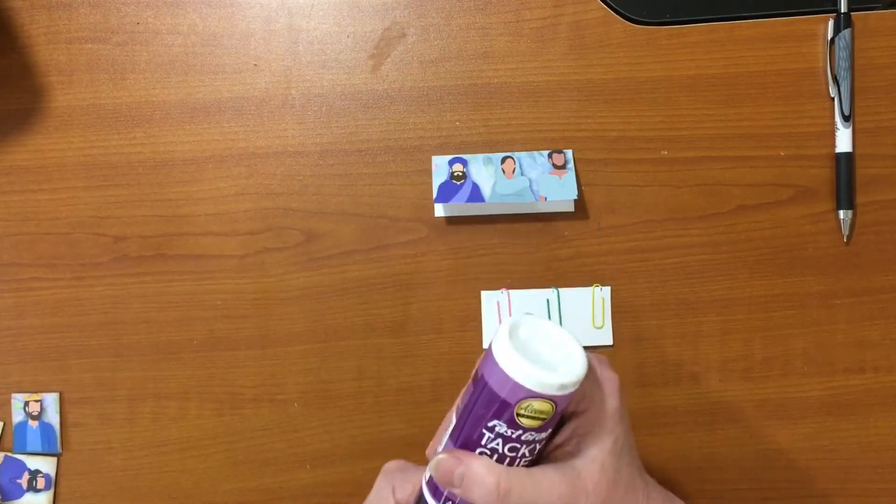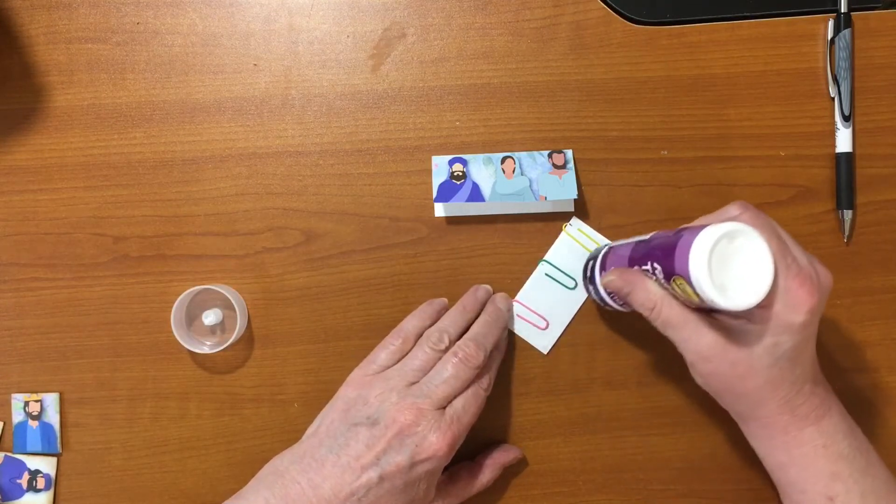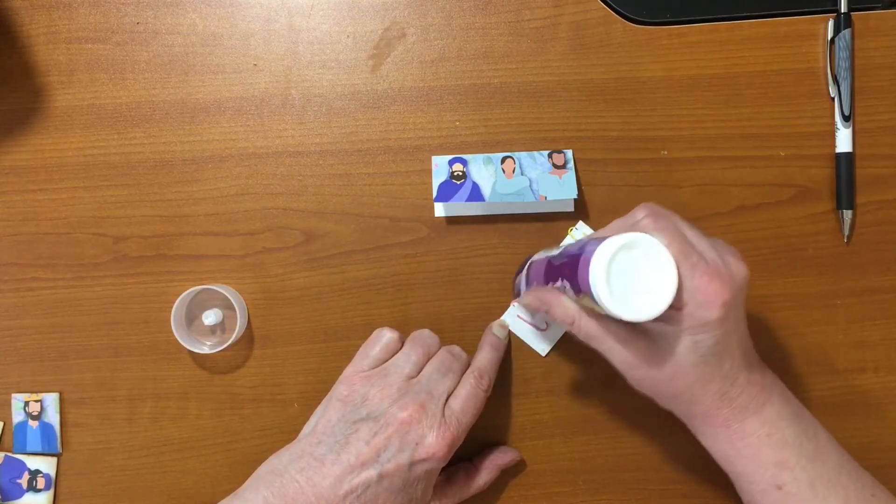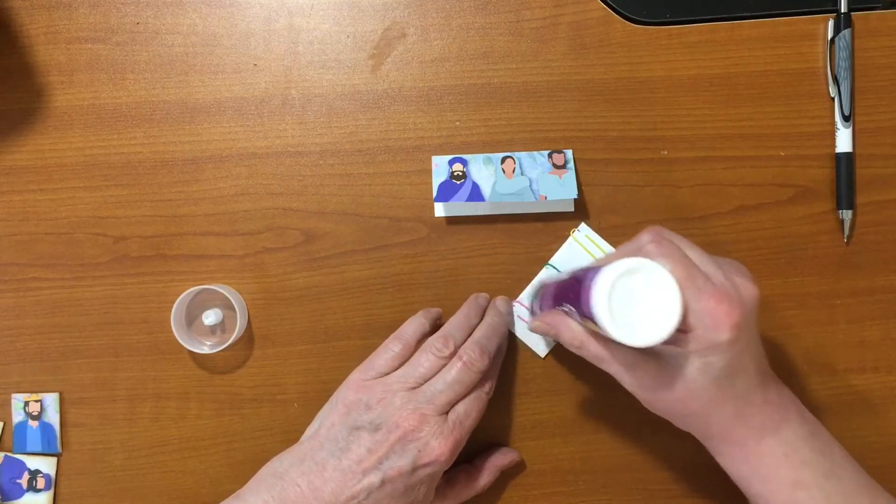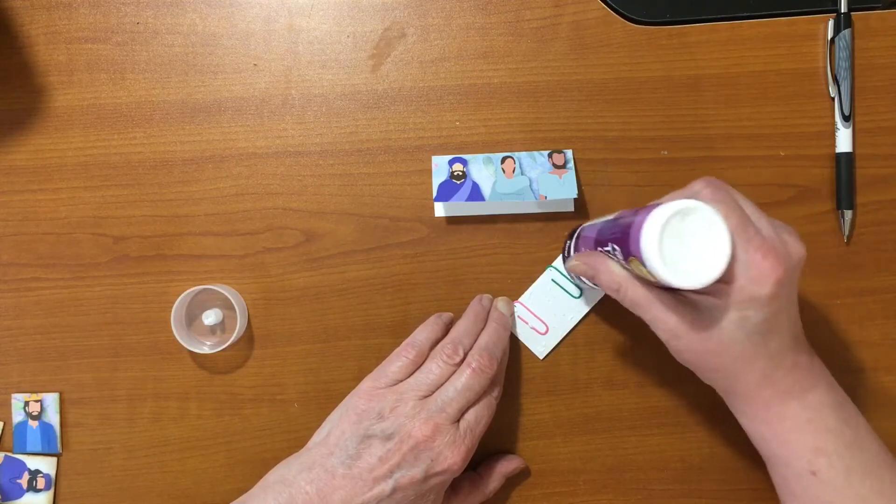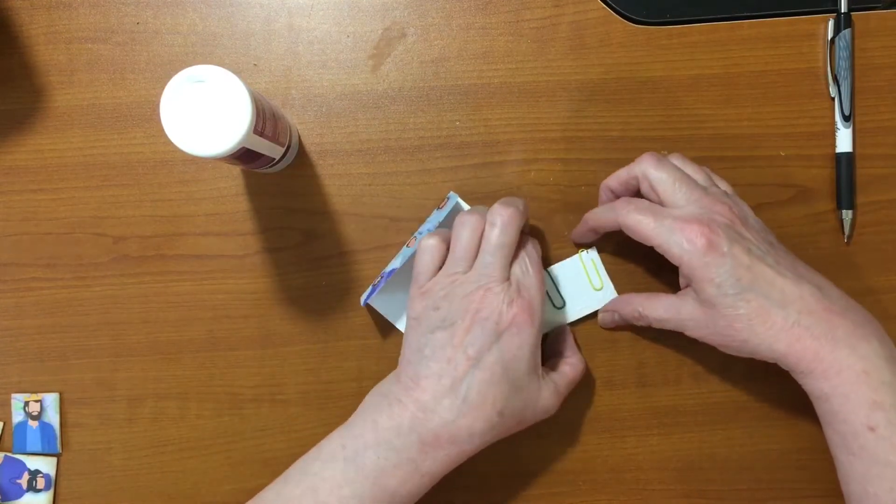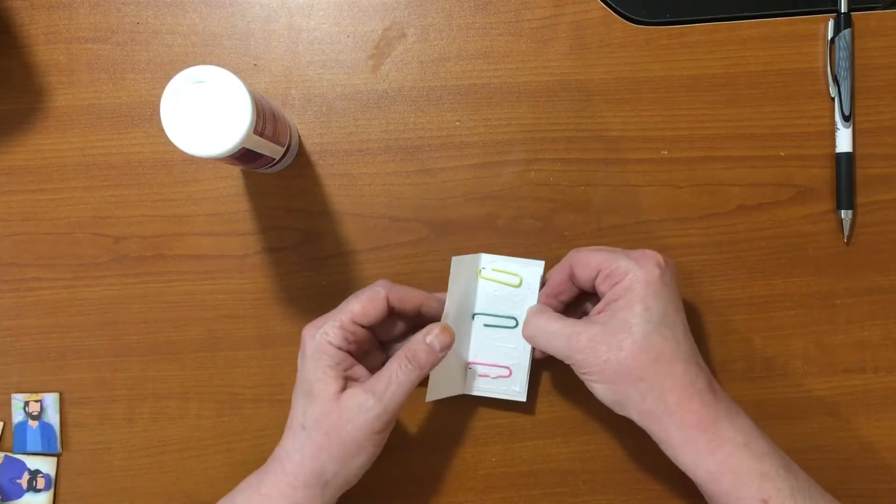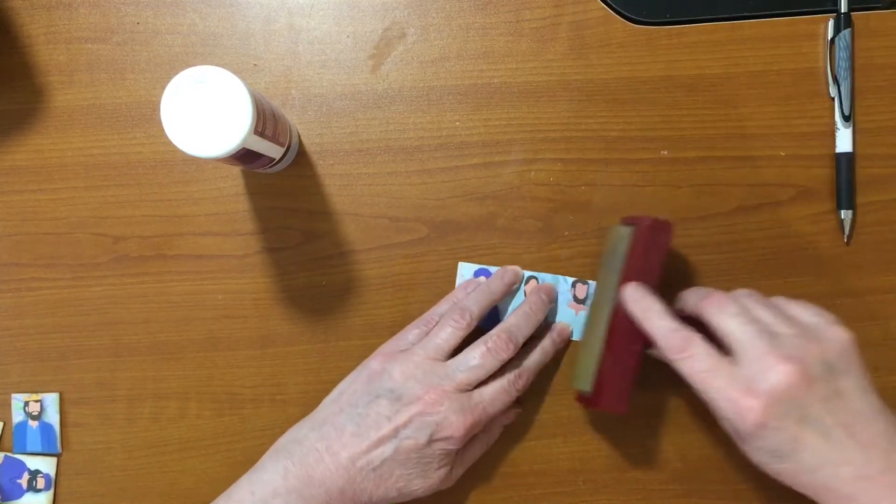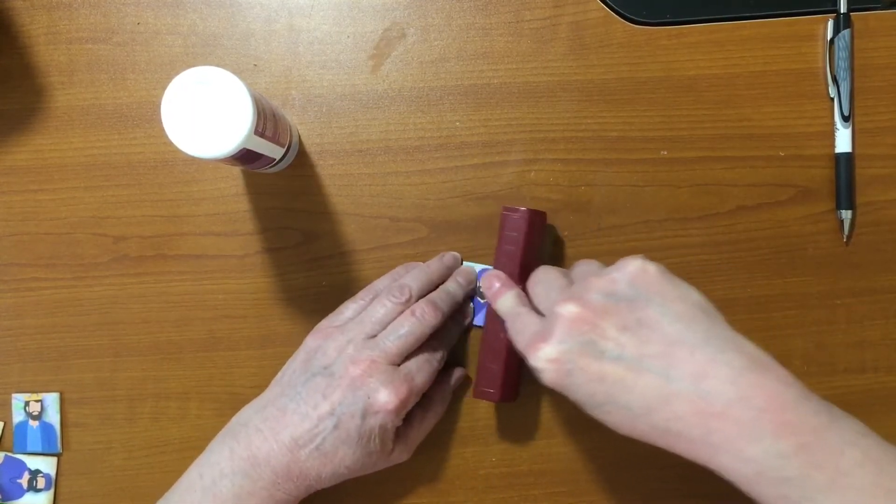I take my tacky glue and put on a generous amount all around the edge and on either side of the paper clip. Then I put this inside. I scored this in the middle and fold it down like that. I find it easier to use this brayer to squish it in between those paper clips.